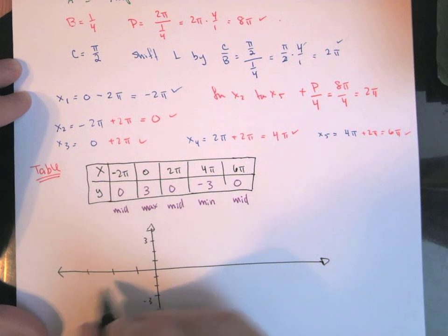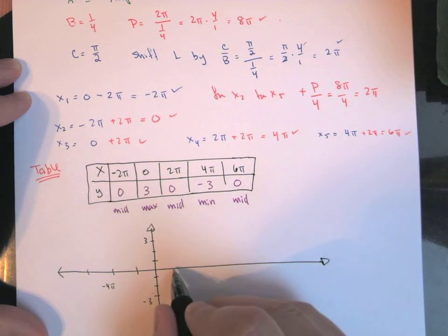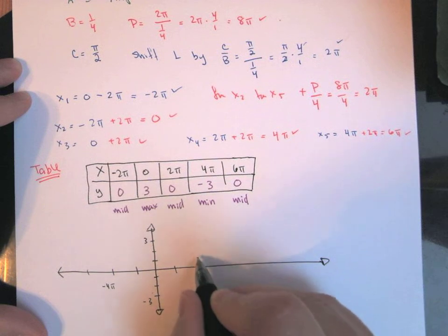This would be 4 and negative 6. So this would be positive 2π, this would be 4π, 6π, 6π, 8π.